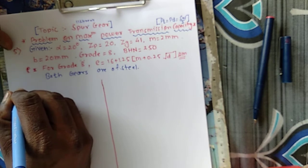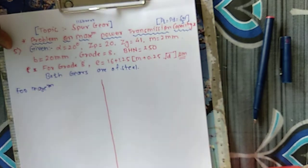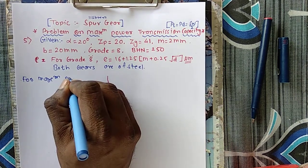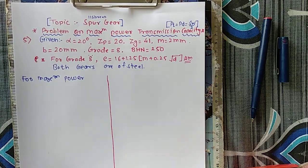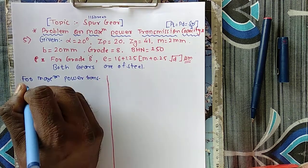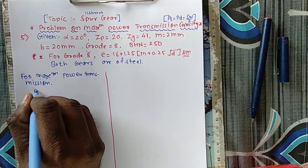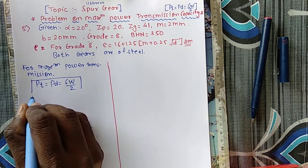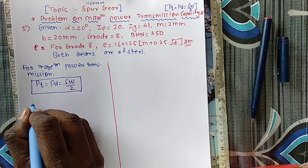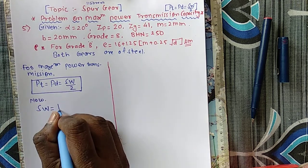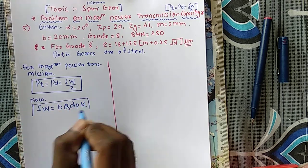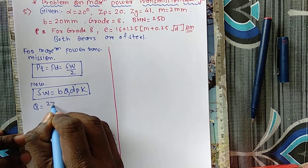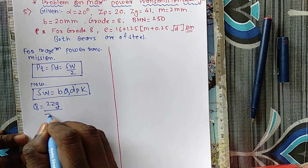For maximum power transmission, I will write the equation: PT = PD = SW/2. I will first find the wear strength. SW = B × Q × D'P × K. I will first find Q: Q = 2ZG / (ZG + ZP).